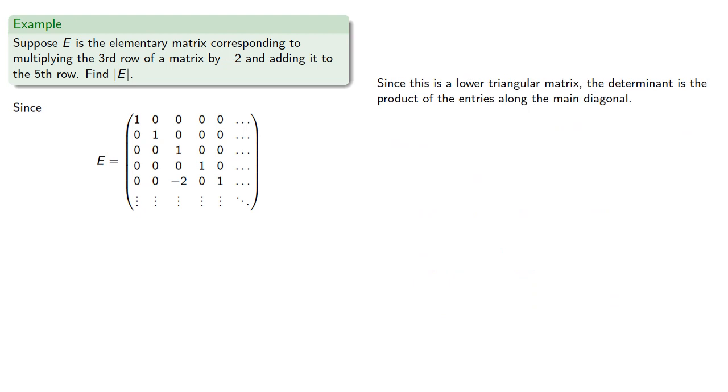Since this is a lower triangular matrix, the determinant is the product of the entries along the main diagonal. But since this was an identity matrix, those entries are all ones, and so the determinant of this elementary matrix is going to be 1 as well.